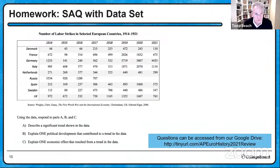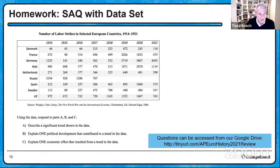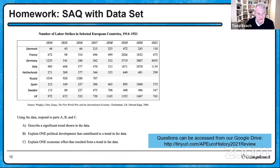Here we go with the SAQ homework. This was a data set I put together — students have 20 minutes per SAQ. The data shows the number of labor strikes in selected European countries from 1914 to 1921, so 1914 to 1918 is World War I, and these are a few years after. Task A is to describe a significant trend shown in the data. Task B is to explain one political development that contributed to a trend in the data. Task C is to explain one economic effect that resulted from a trend in the data. There is a difference between describe and explain.